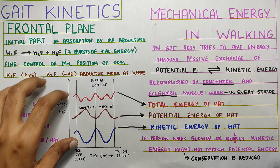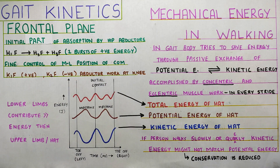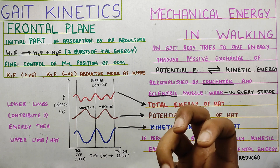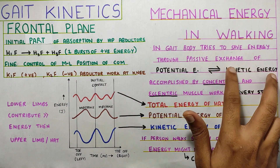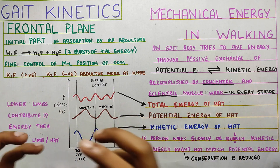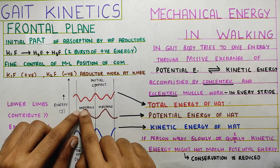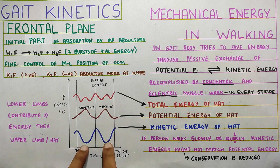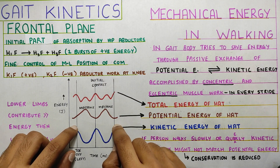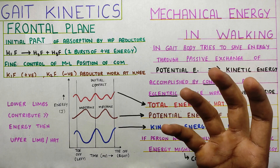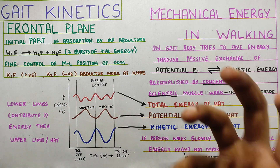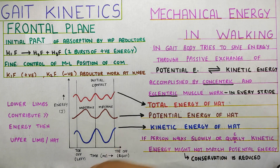Lower limbs overall contribute much more energy in general walking than the upper limbs, forming the basis of potential and kinetic energy exchange. To summarize: potential and kinetic energy keep interchanging at different parts of the gait cycle. When the body is higher during mid stance, potential energy is high and kinetic energy is low. When the body is moving ahead during push-off, kinetic energy is high and potential energy is very low. This is accomplished by the concentric and eccentric muscle activity we discussed.